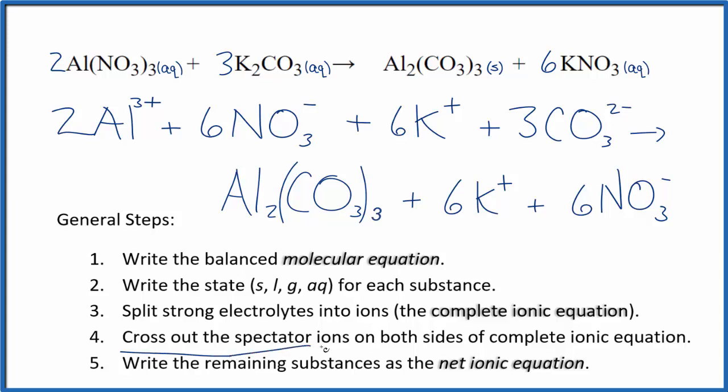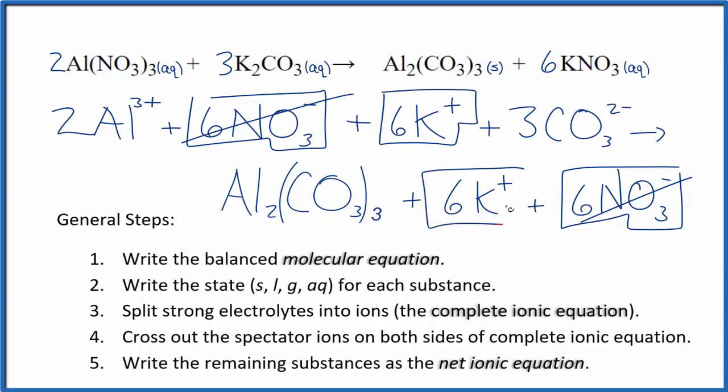Now we can cross out the spectator ions. They're on both sides of the complete ionic equation. In the reactants, I see there are six nitrate ions and six nitrates in the products. These are spectator ions, we can cross those out. Six potassium ions in the reactants and in the products. Spectator ions, we cross them out.